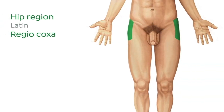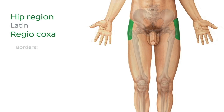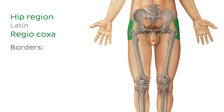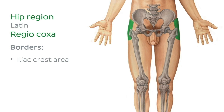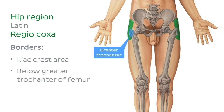Let's stop next for a moment at the hip region. This region is located anterior and lateral to the gluteal region and extends once again from the top of the hip bone, the iliac crest, to the area just below the palpable bony part of the hip, which is formed by the greater trochanter of the femur.